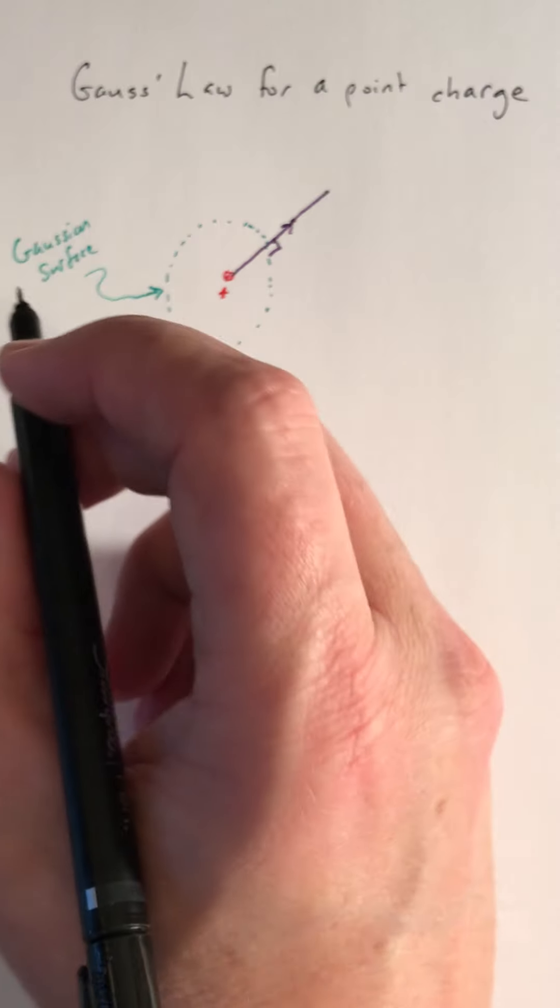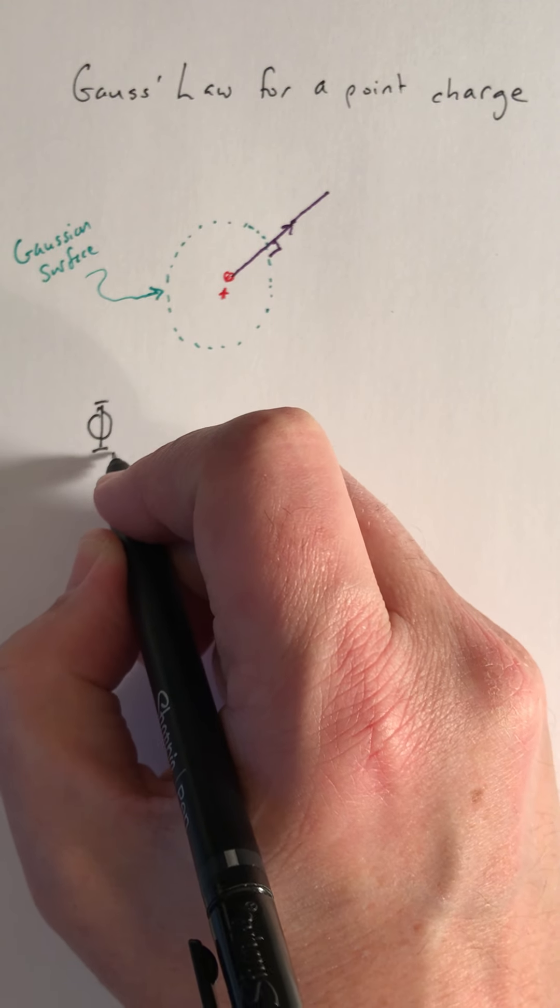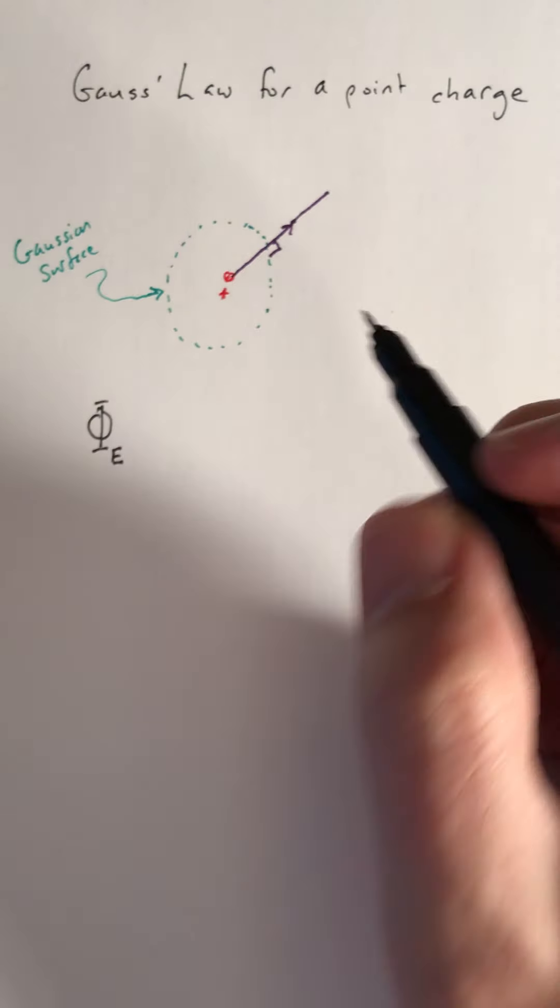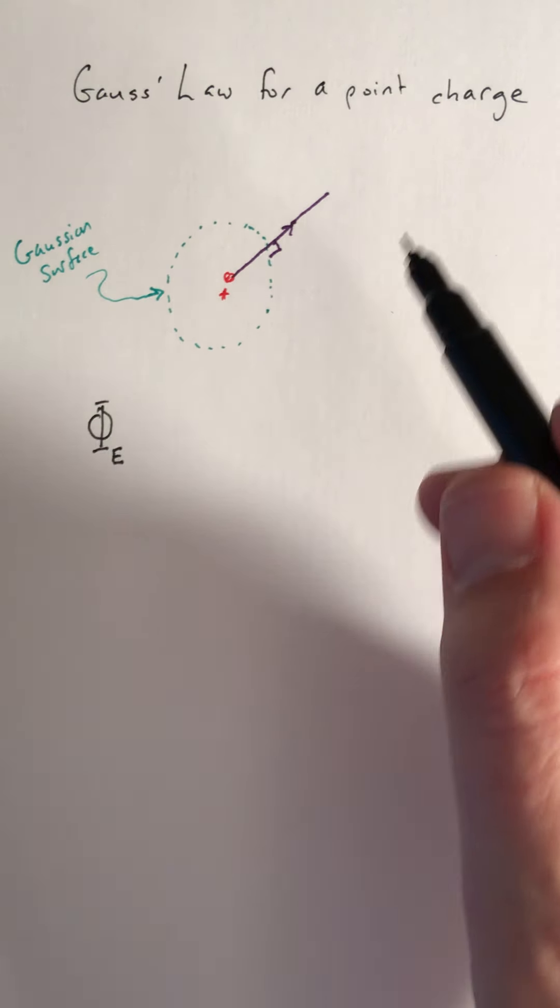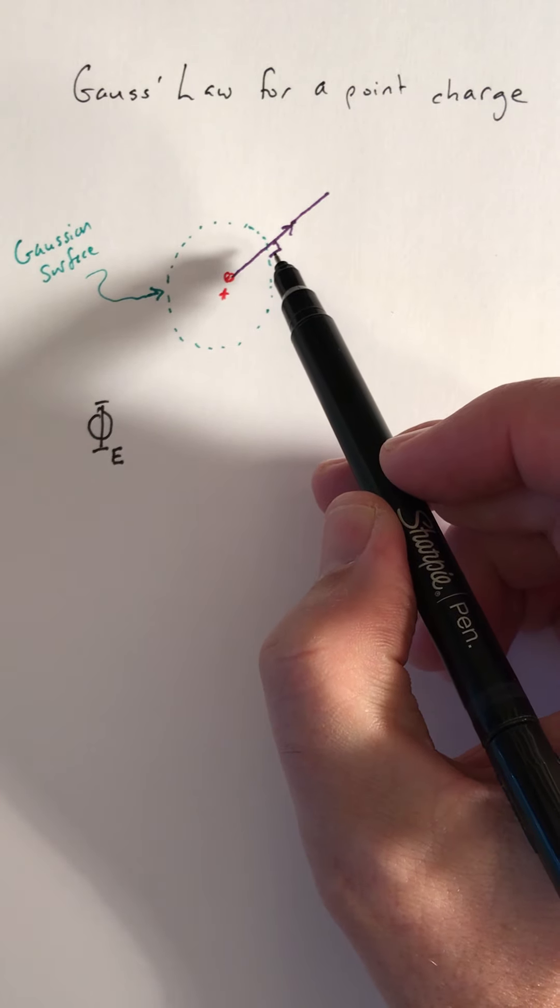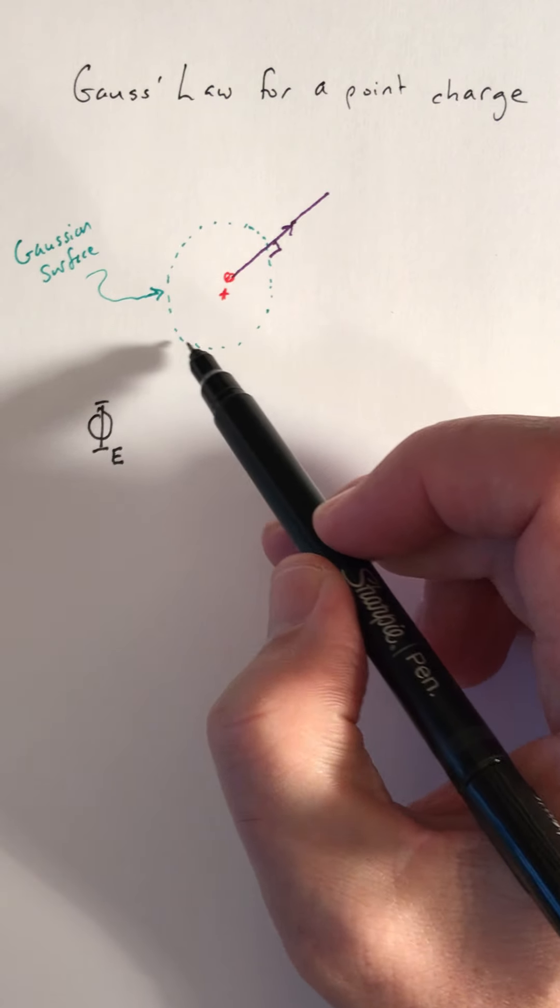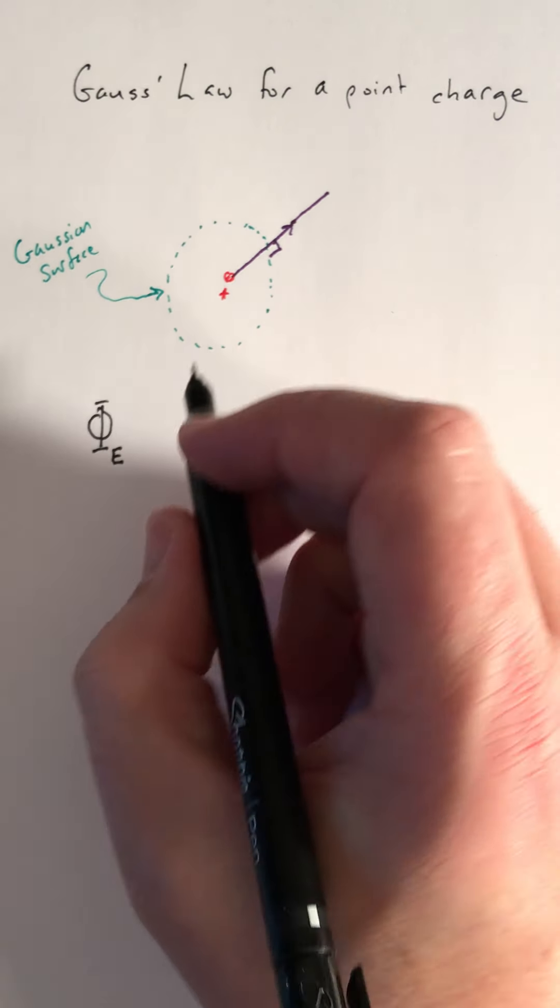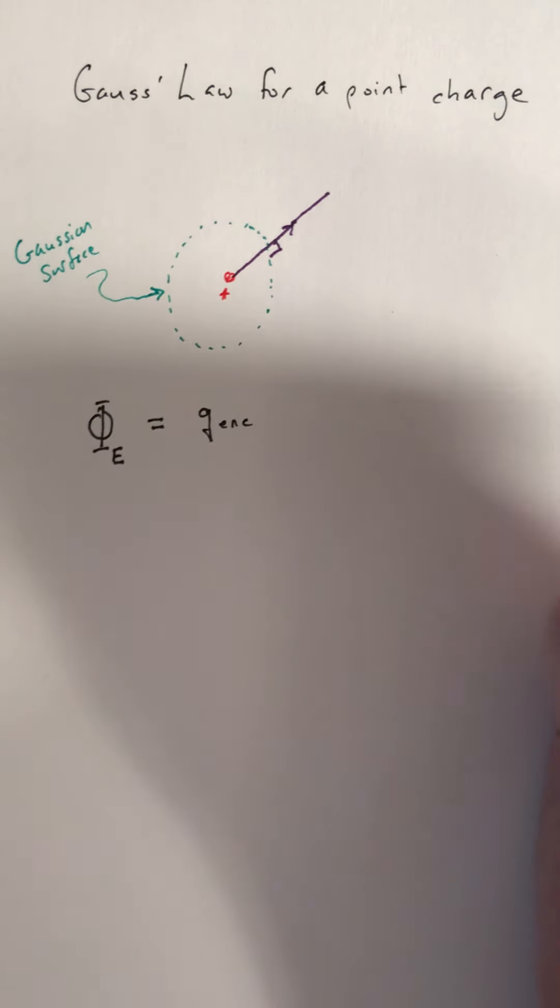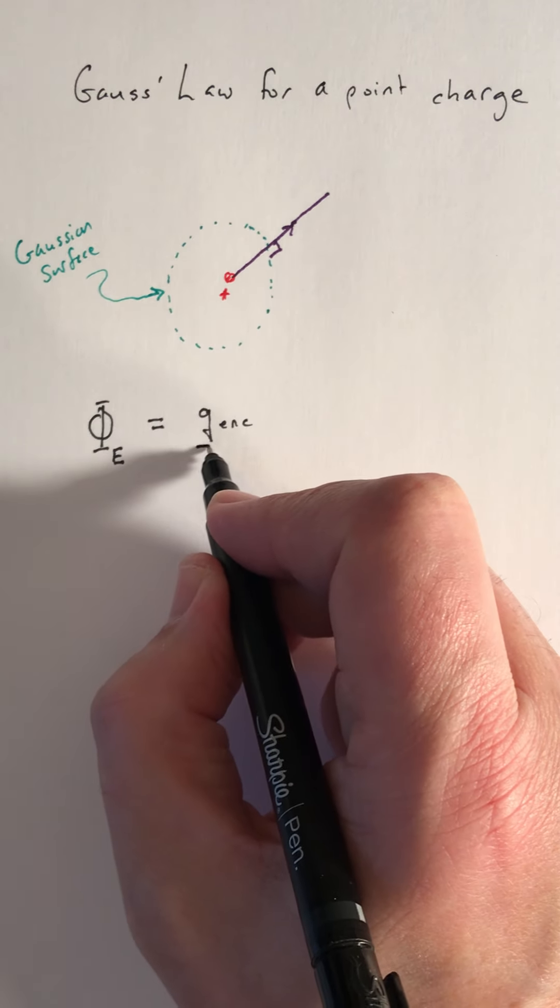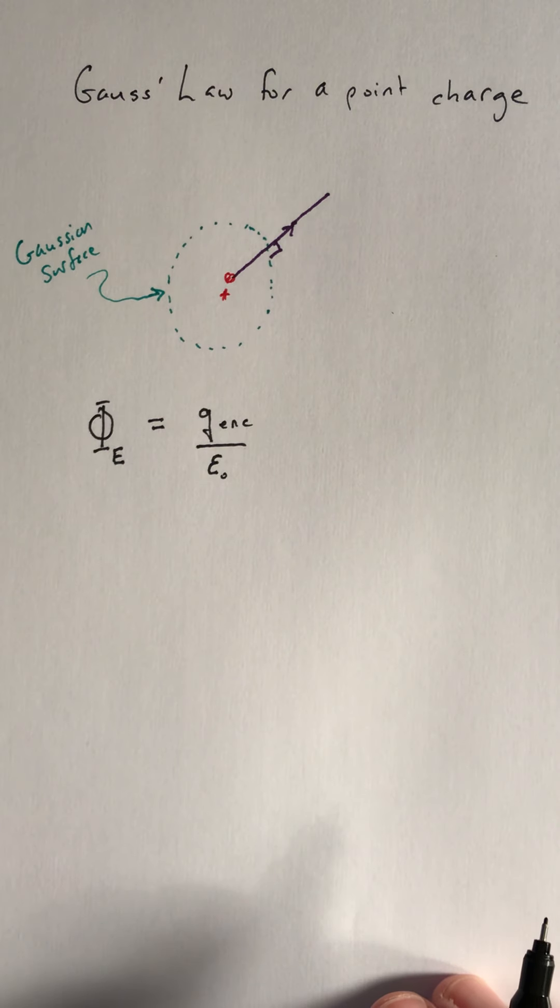So what Gauss's law has to tell us about this arrangement of my one point charge is that I add up the flux of the electric field, so that's the perpendicular component of the electric field added up all over the surface of my sphere. That is going to have to equal the charge enclosed by the sphere divided by the permittivity of free space epsilon naught.